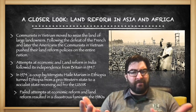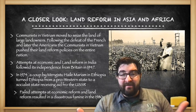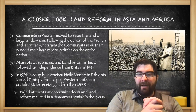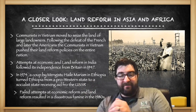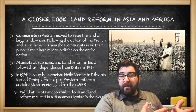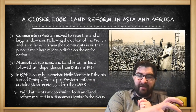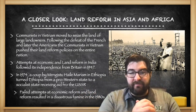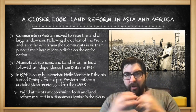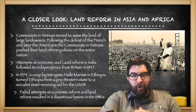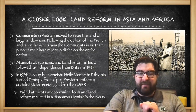In Asia and Africa, we see some of the same. Communists in Vietnam moved to seize the land of large landowners. Following the defeat of the French and later the Americans, communist leadership in Vietnam pushed their land reform policies on the entire nation — north and south — after the war. Attempts at economic and land reform happened in India following independence from Britain in 1947. In Ethiopia, a military coup by Mengistu Haile Mariam turned the country from a pro-Western state into a socialist state that began receiving aid from the Soviet Union. As they implemented land reform policies, a disastrous famine resulted, and in the 1980s Ethiopia was one of the most desperately hungry nations in the world, prompting Live Aid movements in the West to raise donations for the starving population.